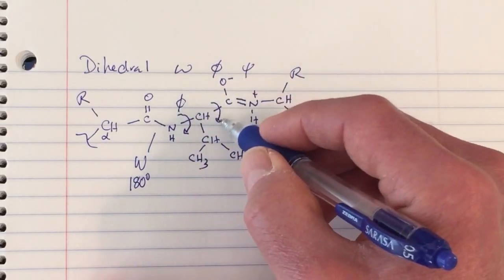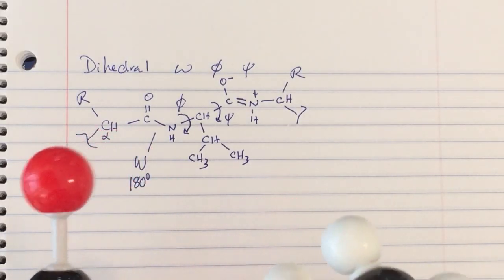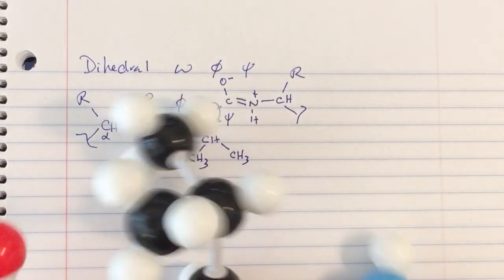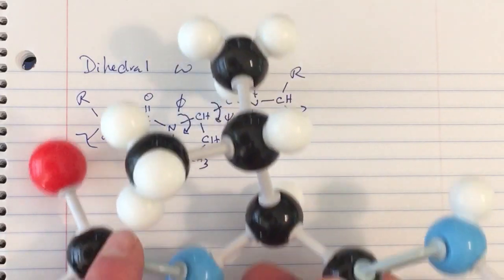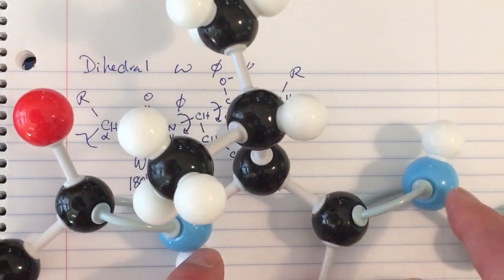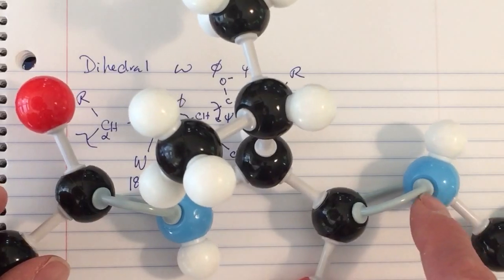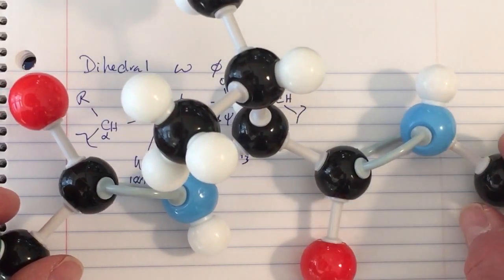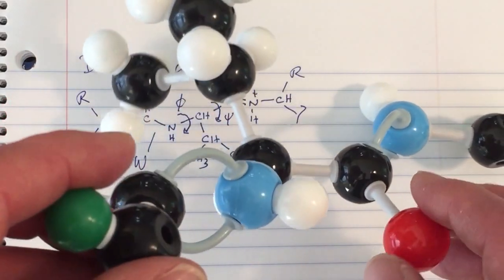To help illustrate the values of Phi and Psi, I've got here a model of the same polypeptide segment we were looking at. We have here all of the peptide bonds drawn with the double bond linking the carbonyl carbon and amide nitrogen, just to emphasize the fact that they are flat, and in both cases they are in the trans configuration.